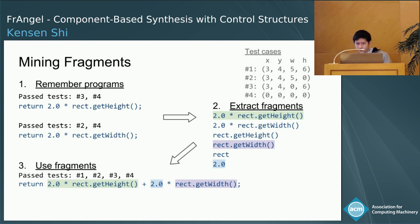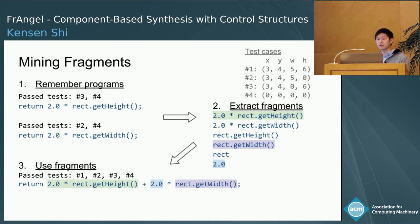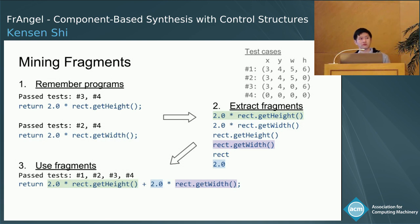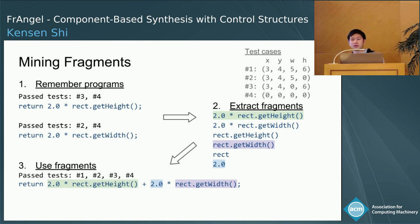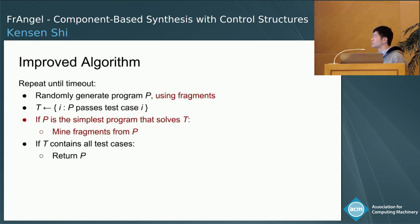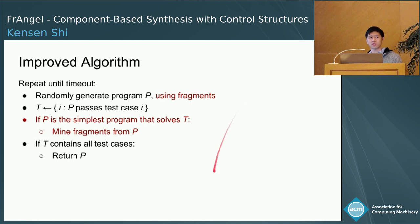To summarize: we remember a diverse set of programs that are likely to be relevant because they passed some of the test cases. By mining fragments from them, we can more easily explore a space of larger programs with similar behaviors. Remember the guiding principle—the more behaviors we can find, the sooner we'll land on the target behavior. This is the random search algorithm improved by mining fragments: we use fragments when generating candidate programs, and whenever we find the simplest program for some subset of test cases, we mine fragments from it.